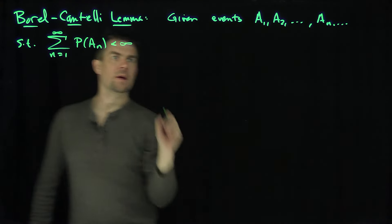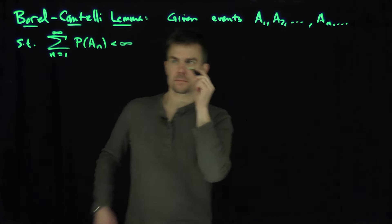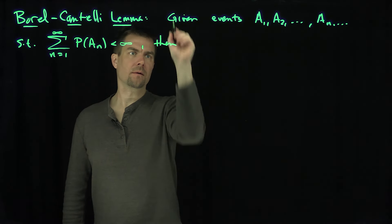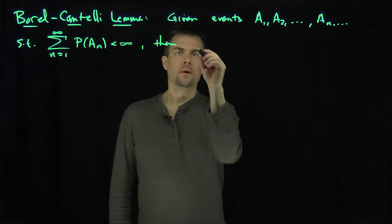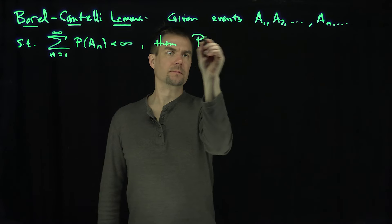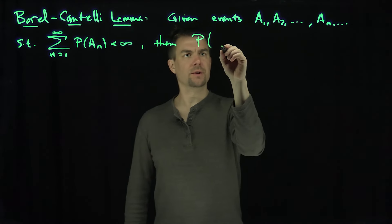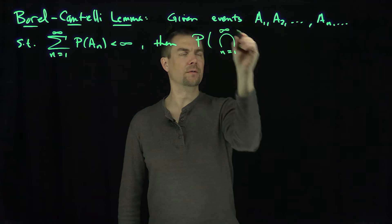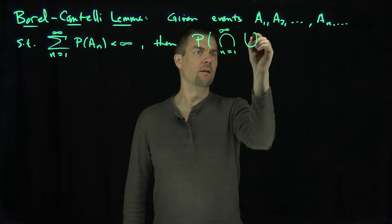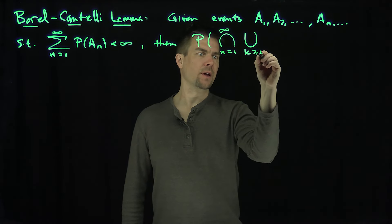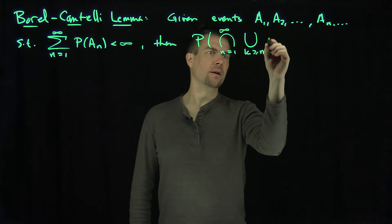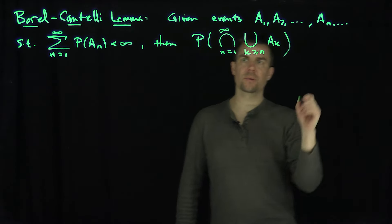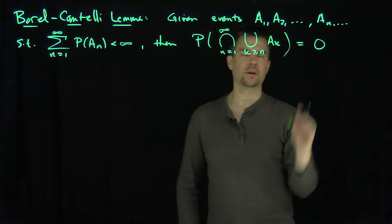then if this is so, the probability of this set — the intersection as n goes from 1 to infinity of the union over k greater than or equal to n of AK — the probability of this event is equal to zero.